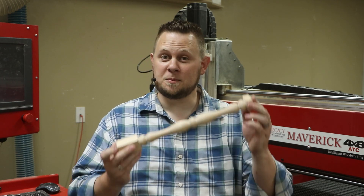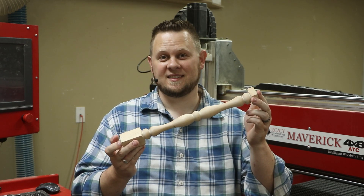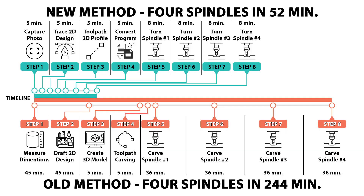Let's break down both methods as if we wanted to duplicate this spindle four times. You'll notice each programming method has the same number of steps, but the total time to complete is significantly different. For this example, the design, programming, and cutting process are over 4.5 times faster using Legacy's new turning method. This will save us over 3 hours and greatly simplify the design and programming process.